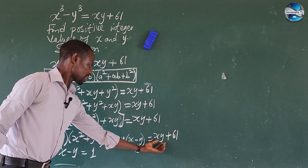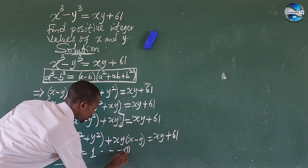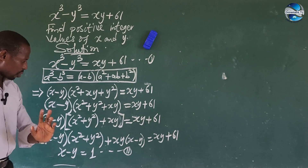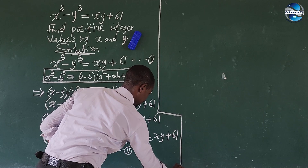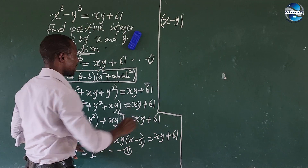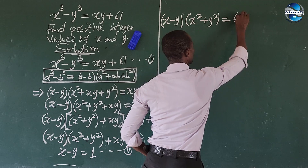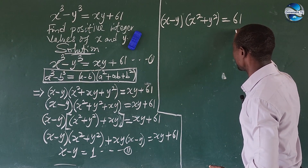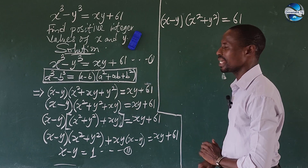Let's take the main expression as equation 1. From equation 2, the whole expression now becomes: (x minus y)(x² plus y²) equals 61. Now I want to make y the subject of the formula from equation 2 and substitute it into this expression.